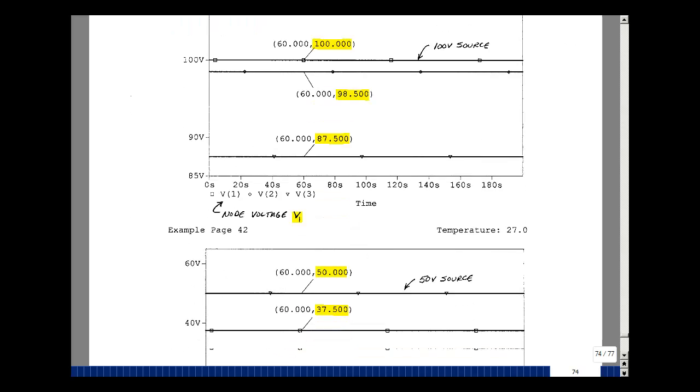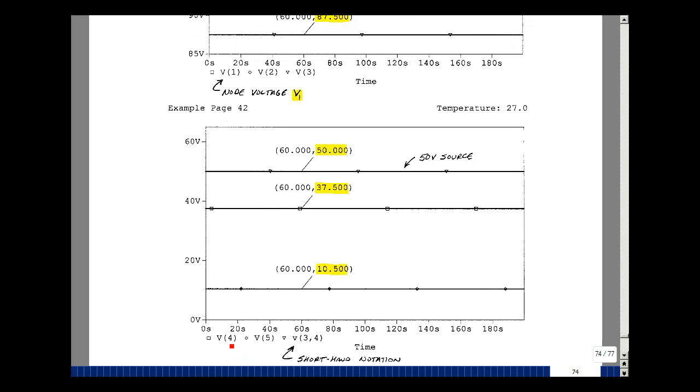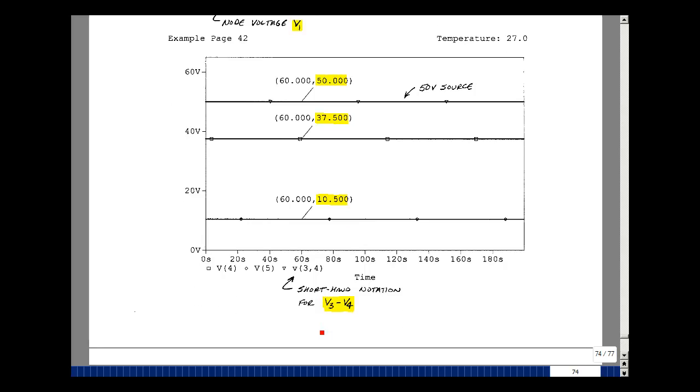I did a second graph of the remaining node voltages. Here's node voltage 4 and 5, and this is the voltage between nodes 3 and 4. You can use an uppercase or lowercase letter, it doesn't make any difference. Node voltage 4 is 37.5 volts, and the voltage between nodes 3 and 4 is a 50-volt source. You could also type V(3) minus V(4) in a math operation. This is a shorthand way of just getting that result.